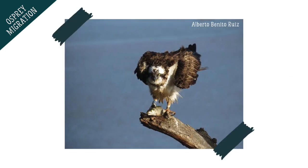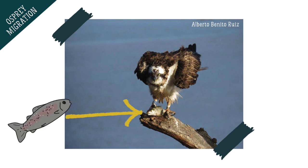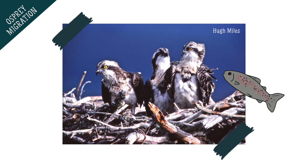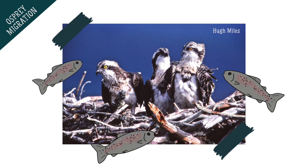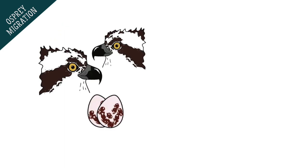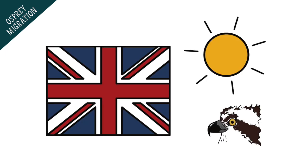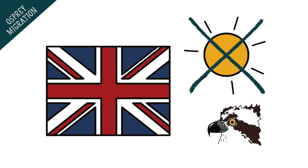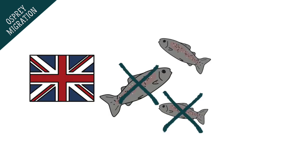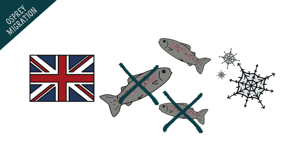We know that ospreys are predators because they catch and eat fish, and we also know it's important for parent ospreys to provide lots of fish for their chicks to grow through the summer. So if you were an adult osprey wanting to breed you would want to nest somewhere where lots of food was available, which means that the UK in the summer is the perfect place to be. But winters in the UK aren't at all sunny and aren't suitable for ospreys — not only is there less food available but lots of the water and land becomes covered in snow and ice which makes hunting difficult, so it's not worth the risk of staying here over the winter.